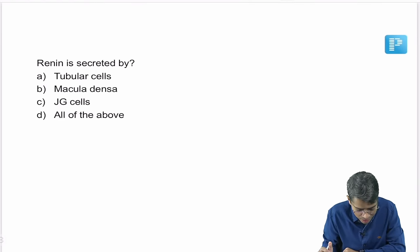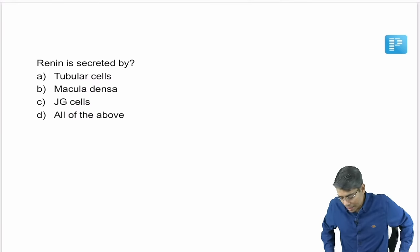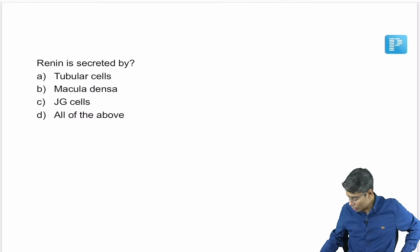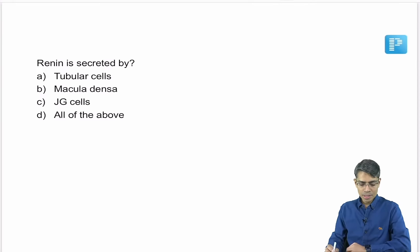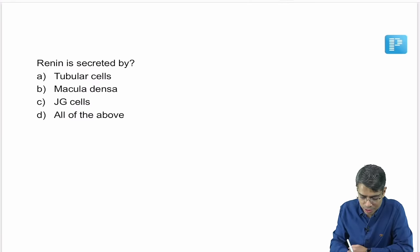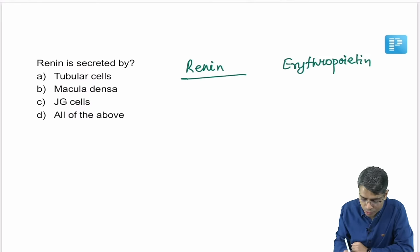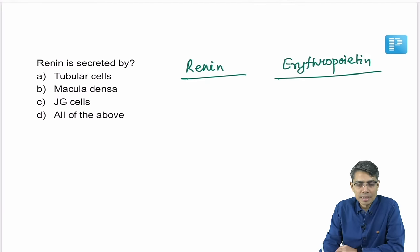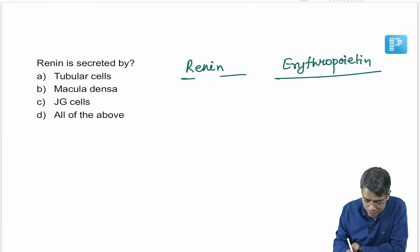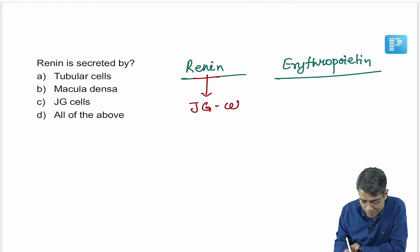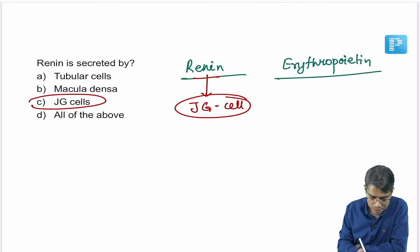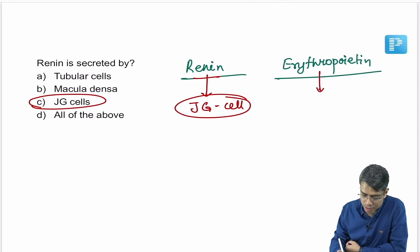Next question: renin is secreted by? The answer is the juxtaglomerular (JG) cell — no confusion about this. However, if the question is about erythropoietin, note that both renin and erythropoietin are produced from the kidney, but from different cells.